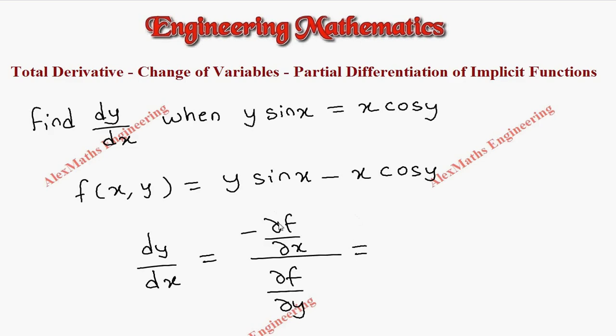Now in the numerator we have minus partial derivative with respect to x. So y is constant and differentiation of sin x is cos x. Here minus cos y is constant and differentiation of x is 1.